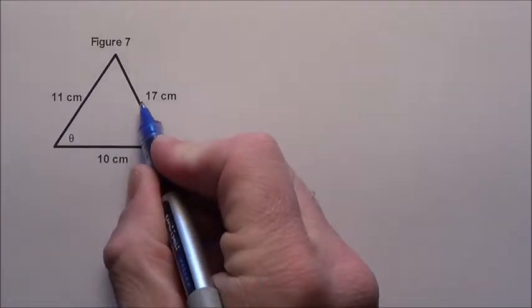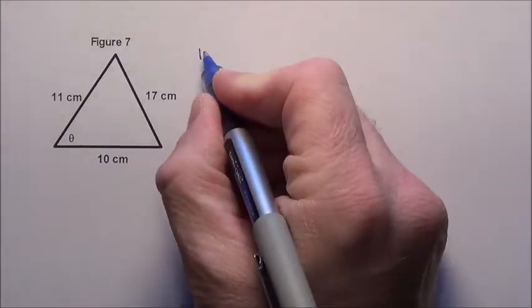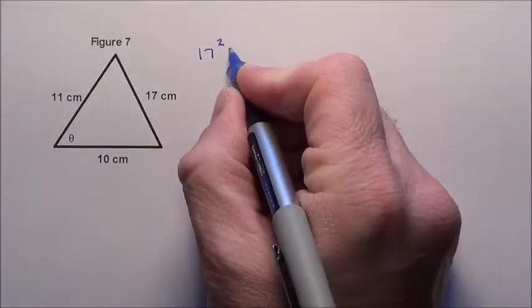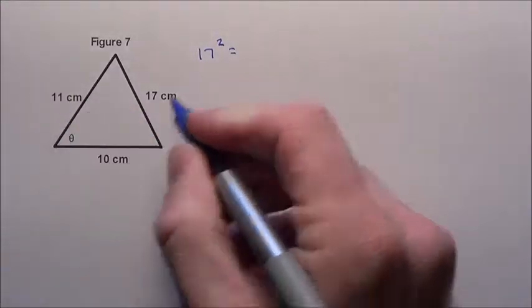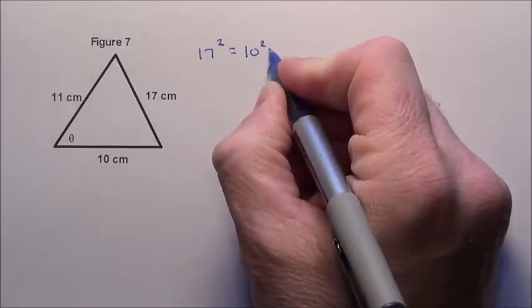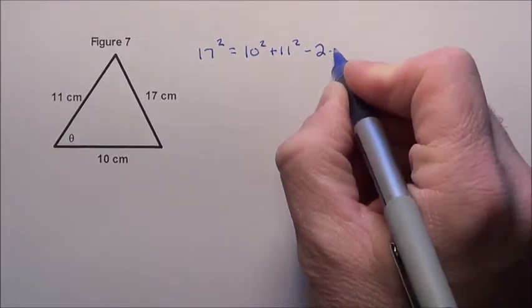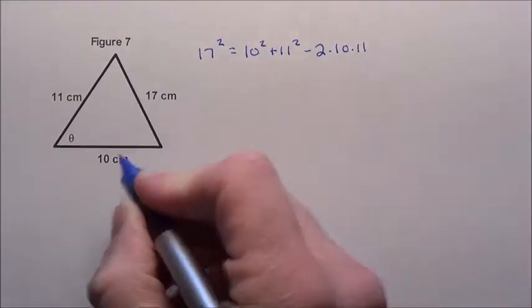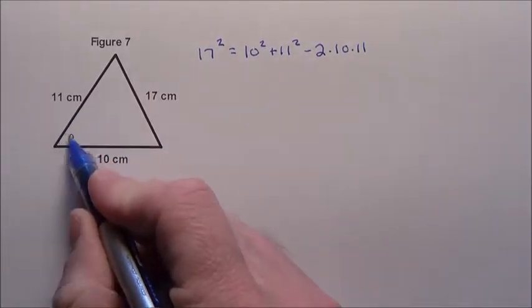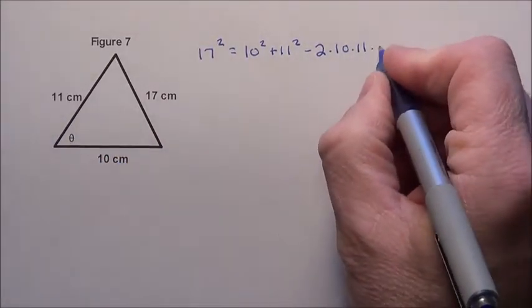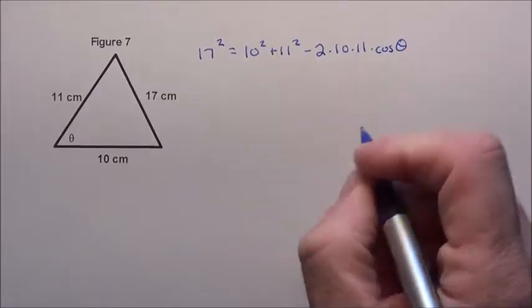The law of cosines says the side across from this, which in this case is 17, that squared is equal to the two sides squared, the 10 squared plus the other guy squared, minus 2 times each of those two sides that surrounds the angle. It helps form the angle, which is 10 and the 11, times the cosine of the angle itself.